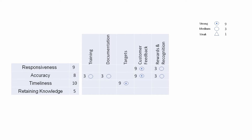Timeliness has a strong relationship with targets and with customer feedback. Employees of the service center will respond timely to customer queries if targets are set up and the customer feedback mechanism is working well. There is also a medium relationship between reward and recognition and timeliness, because rewarding employees encourages them to complete work on time. Retaining knowledge has a weak relationship with training but a strong relationship with documentation — documenting processes means 80–90% of knowledge is retained even if an employee leaves.